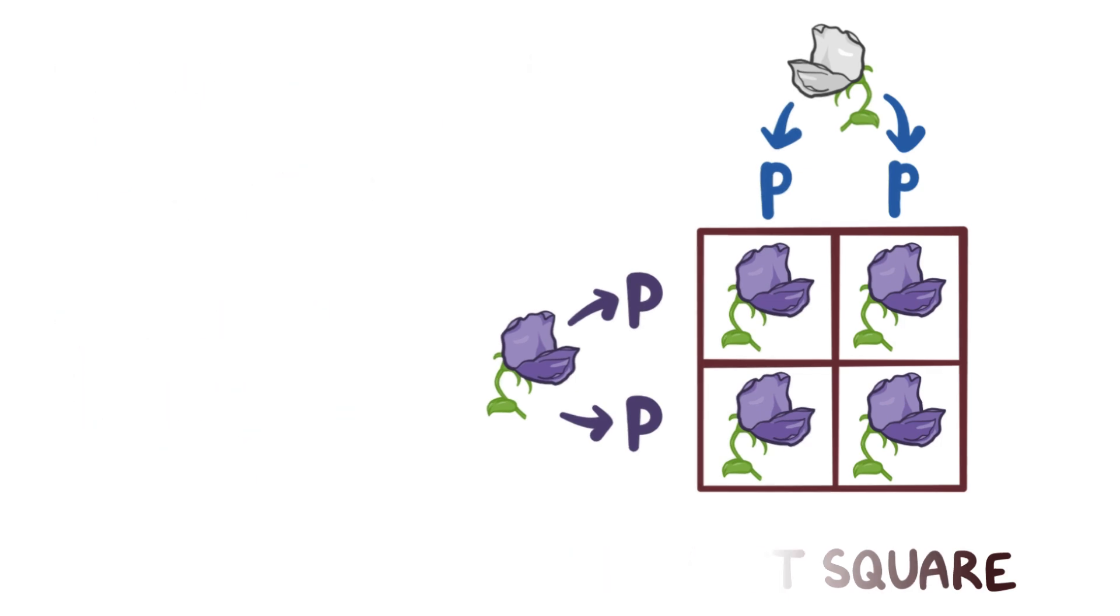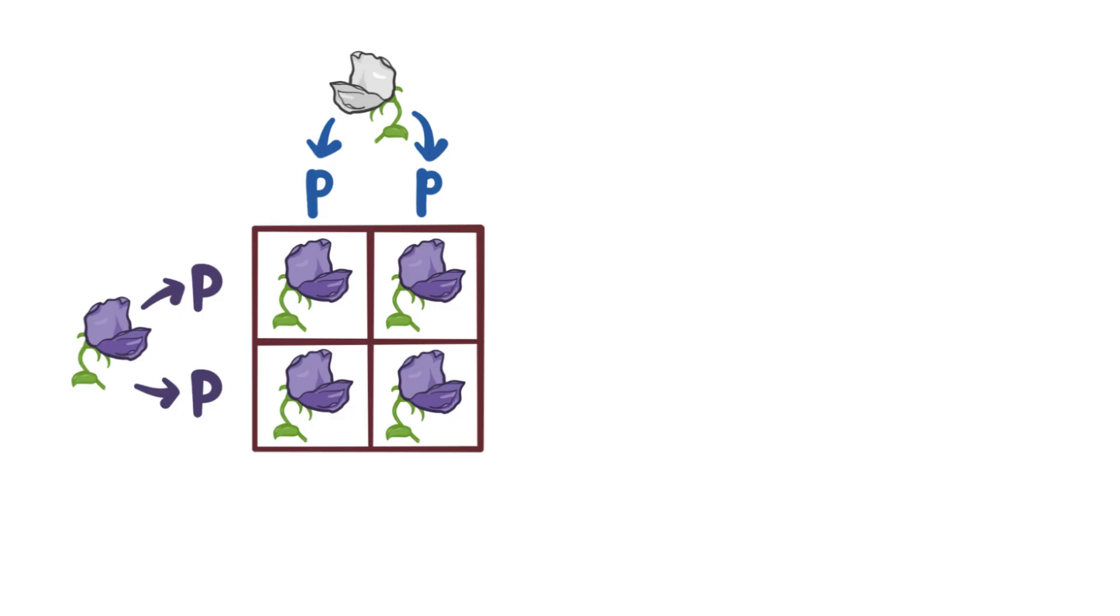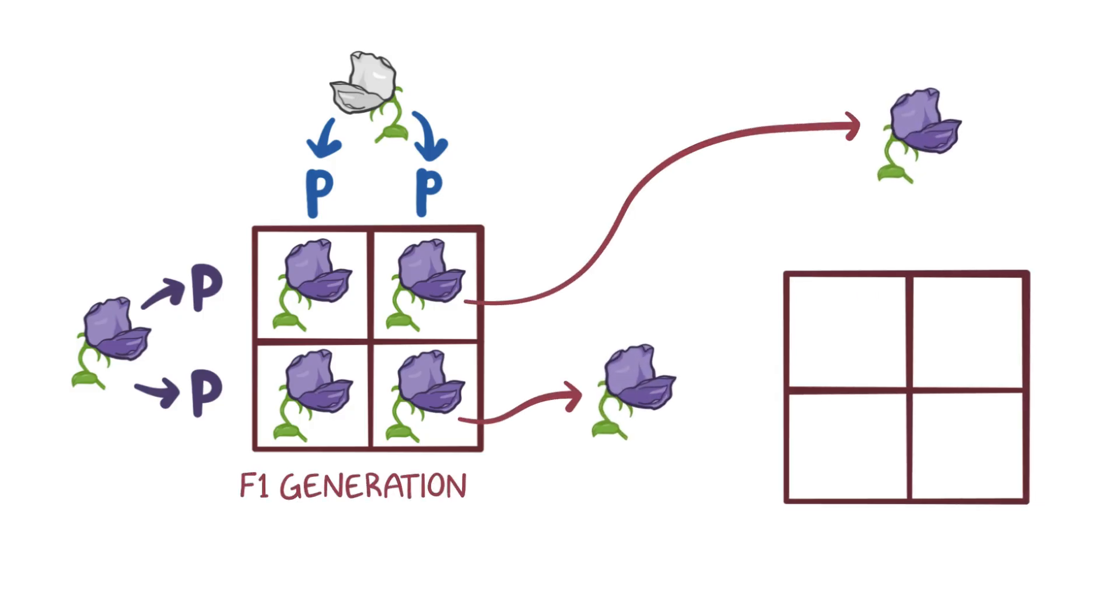When we breed any two of these heterozygous plants in the F1 generation, we can make a new Punnett square with the capital P lowercase p genotype of one parent on the horizontal row, and the same capital P lowercase p genotype of the other parent in the vertical column. When we use the Punnett square, we get one offspring with a capital P capital P genotype, two with a capital P lowercase p genotype, and one with a lowercase p lowercase p genotype.